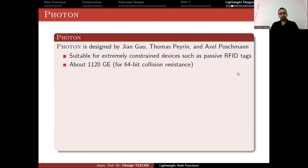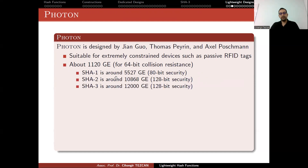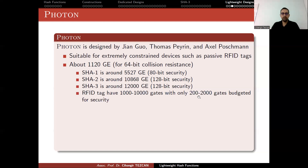Photon was designed by Jianguo, Thomas Perrin, and Ashel Postman, suitable for extremely constrained devices such as passive RFID tags. It requires about 1,120 gate equivalents for 64-bit collision resistance — meaning the hash output is 128 bits, so you have 128-bit security for preimage and second preimage attacks. For comparison, they also provided gate equivalents for SHA-1, SHA-2, and SHA-3. As you can see, Photon requires a very small area compared to these algorithms on hardware at the ASIC level.